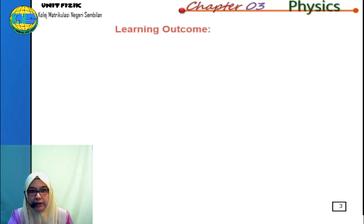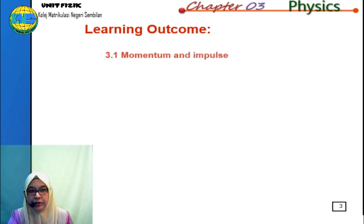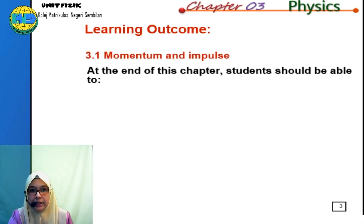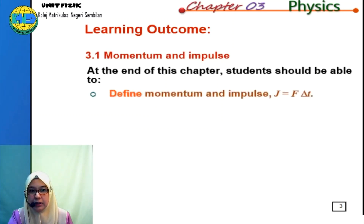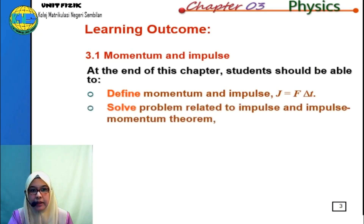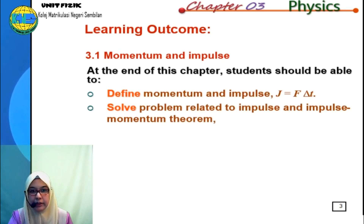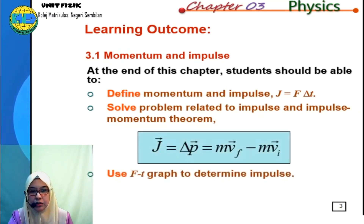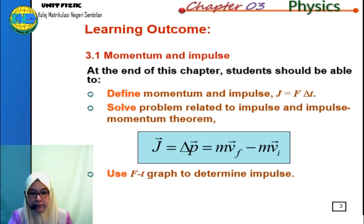Before we start our class, let's take a look at the learning outcomes for subtopic 3.1, momentum and impulse. At the end of this chapter, students should be able to define momentum and impulse, solve problems related to impulse and the impulse-momentum theorem given by J equal to delta p equal to mv final minus mv initial, and use the F-T graph to determine impulse.